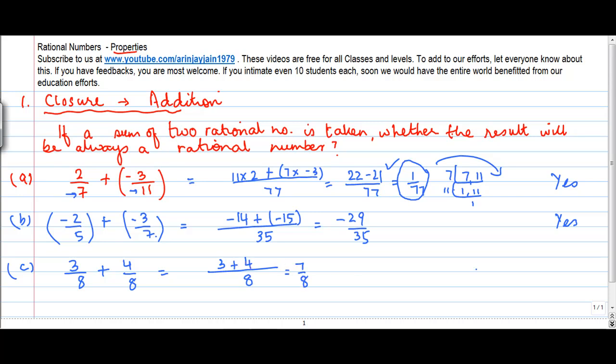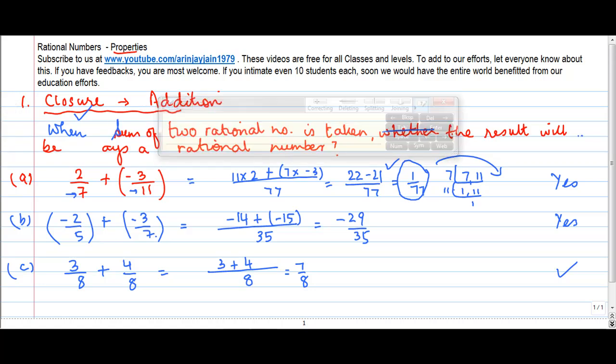Which is again a rational number. So we say that the rational numbers are closed under addition, which means that when sum of 2 rational numbers is taken, the result will always be a rational number. So rational numbers are said to be closed under addition.